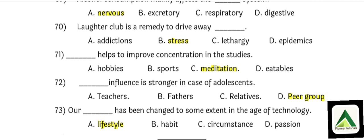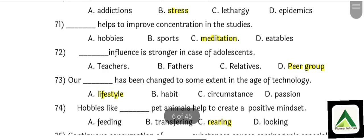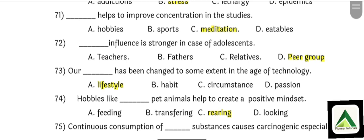An upcoming video related to meditation will be uploaded, so please watch that video to improve concentration in your studies. Question number 72: Peer influence is stronger in case of adolescence — that is peer pressure from peer groups. Option number D. Question number 73: Our lifestyle has been changed to some extent in the age of technology. That is option number A: Lifestyle.